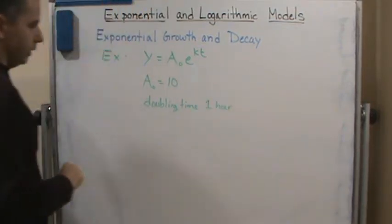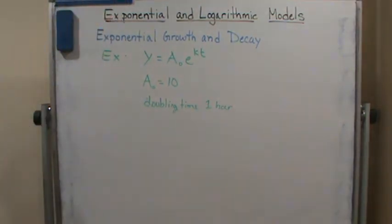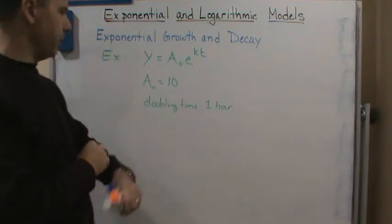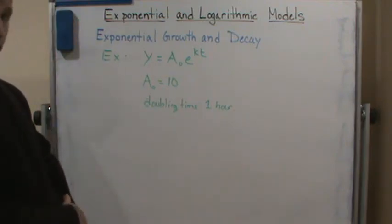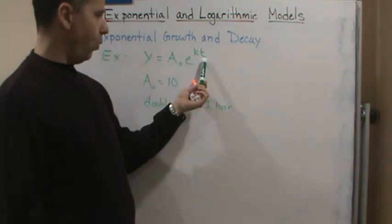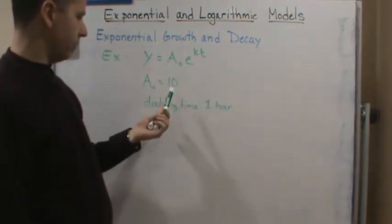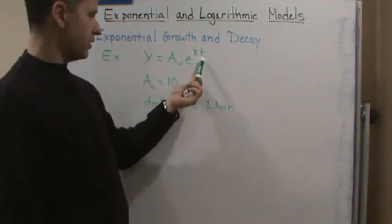Now how does this help us? Well, we know that every hour, and t is in hours, so every hour we have double. We know that when t is zero we have 10, and when t is one we're going to have 20.